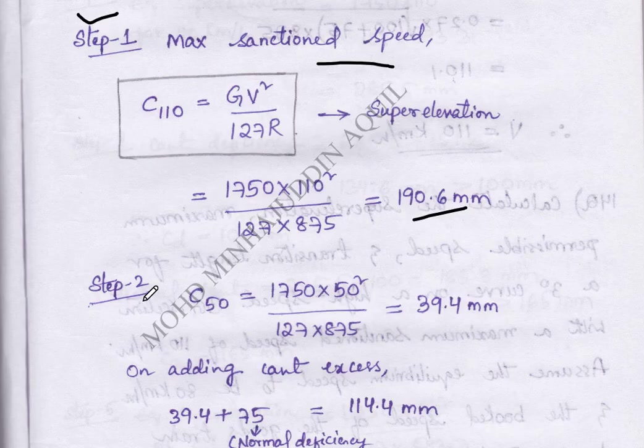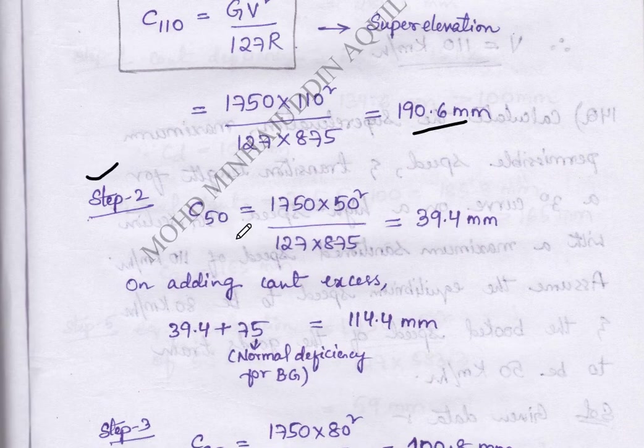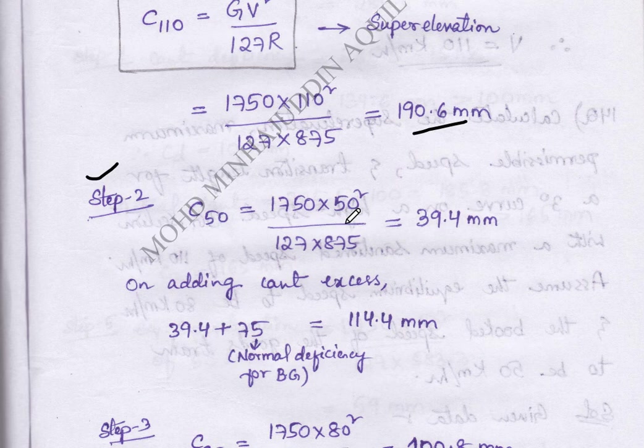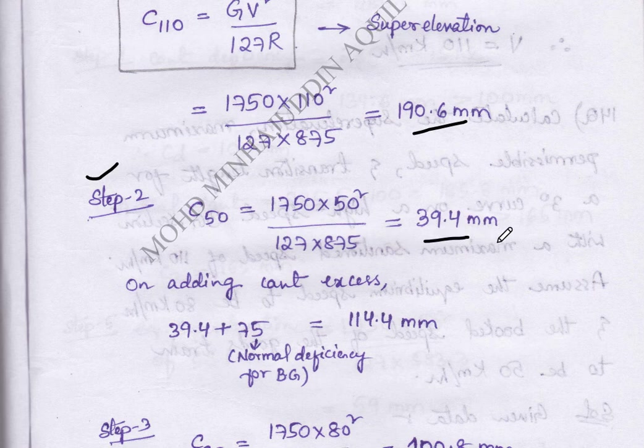Next, step 2. For C50 we have to substitute the value of V. G is 1750, V is 50 by 127 into R as calculated earlier. So we will get 39.4 mm.